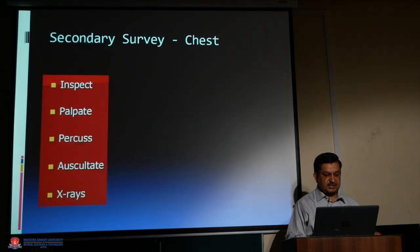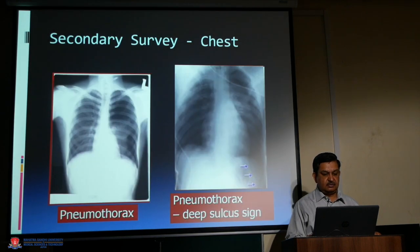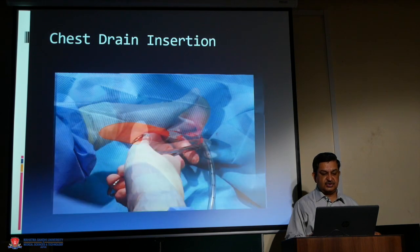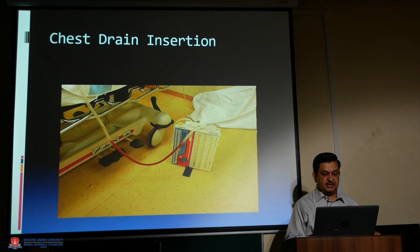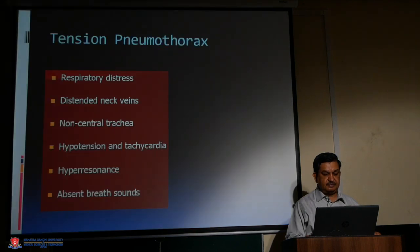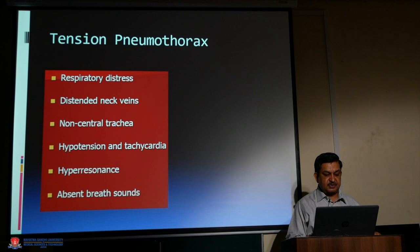Secondary survey of the chest: inspect, palpate, percuss, and auscultate. Obtain X-rays. Look for hemothorax, flail chest, and pneumothorax. Note the deep sulcus sign. Chest drain insertion may be required. Tension pneumothorax presents with respiratory distress, distended neck veins, deviated trachea, hypotension, tachycardia, hyper-resonance, and absent breath sounds. A post-mortem X-ray may demonstrate these findings.